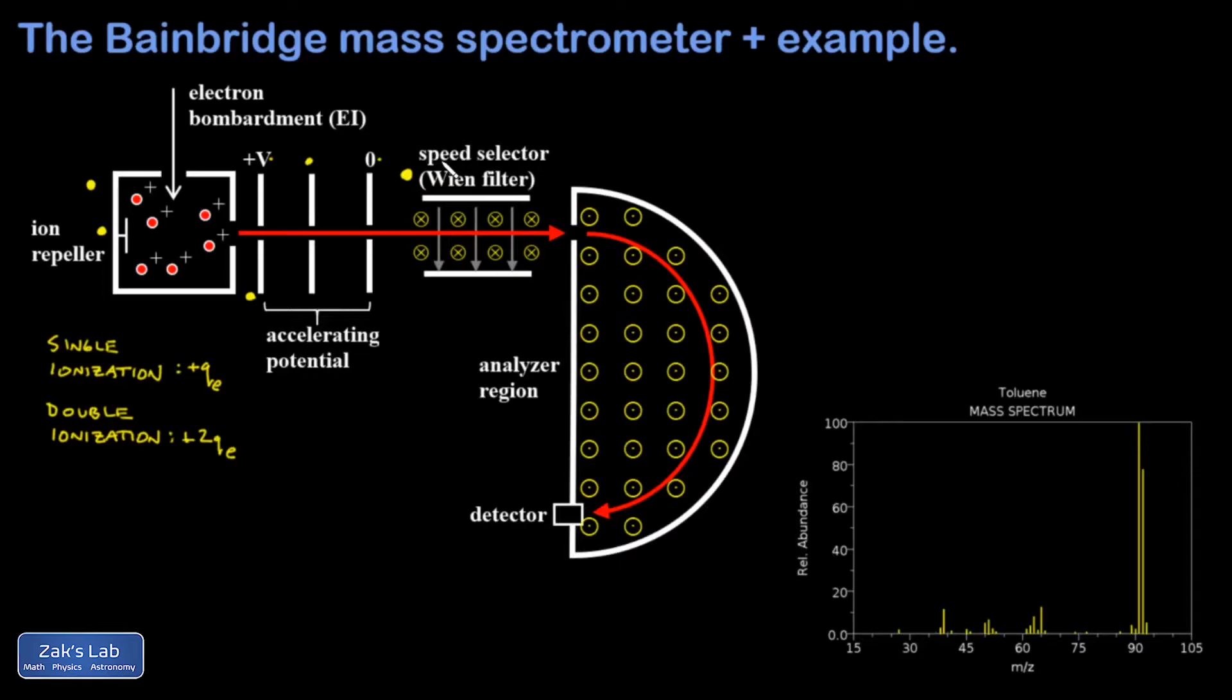This is necessary because, although all the particles have been accelerated through the same potential difference, the particles emerge with a distribution of speeds from the ionizing chamber just due to the random motion in the gas.